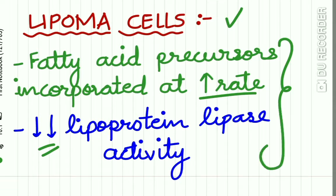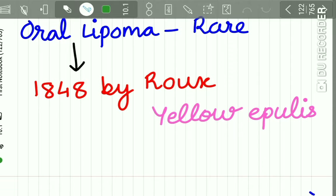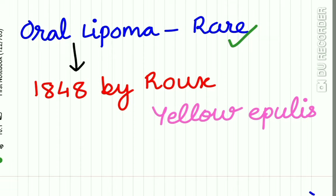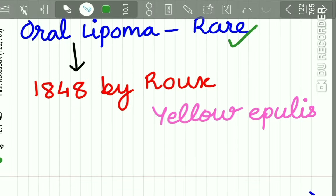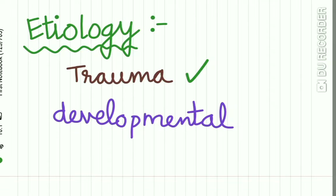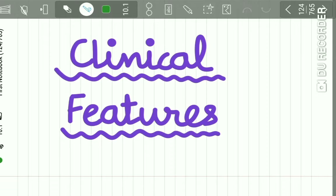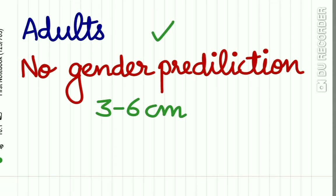Oral lipoma is a rare lesion. It was first described in 1848 by Roca and his associates, who described it as 'yellow epulis.' Regarding etiology, trauma may precede lipoma, and some say it is of developmental origin, as a few lipomas show rearrangement of chromosomes 12q, 13q, and 6p.